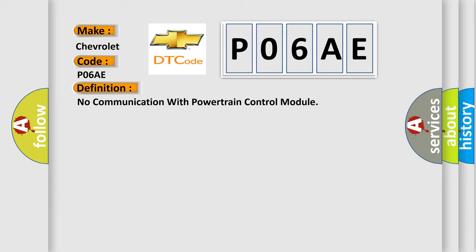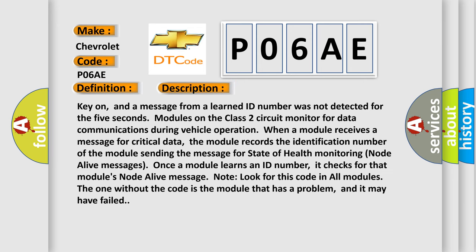And now this is a short description of this DTC code. Key on, and a message from a learned ID number was not detected for five seconds. Modules on the class 2 circuit monitor for data communications during vehicle operation. When a module receives a message for critical data, the module records the identification number of the module sending the message for state of health monitoring node alive messages. Once a module learns an ID number, it checks for that module's node alive message. Look for this code in all modules. The one without the code is the module that has a problem, and it may have failed.